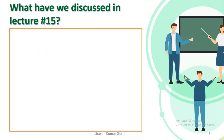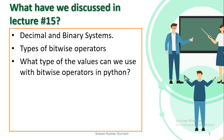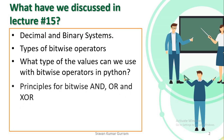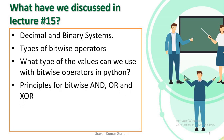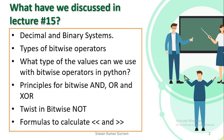Before we start today's session, let us recall what we discussed in our last video. We discussed about decimal number system and binary number system, conversion from decimal to binary and binary to decimal, types of bitwise operators, what type of values can we use with bitwise operators in Python, principles for bitwise AND, OR and exclusive OR, twist in bitwise NOT, and formulas to calculate bitwise left shift and right shift operators. If you haven't watched the previous video, please watch that — the link is given in the description box.